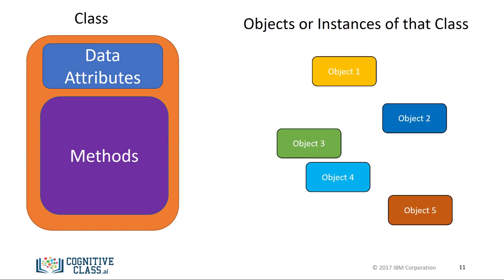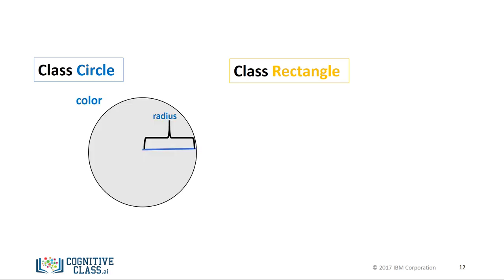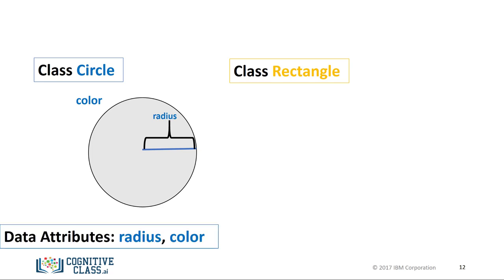The class data attributes define the class. Let's create two classes — the first class will be a circle, the second will be a rectangle. Examining the image, all we need is a radius to define a circle, and we'll add color to distinguish between different instances of the class. Therefore our class data attributes are radius and color.